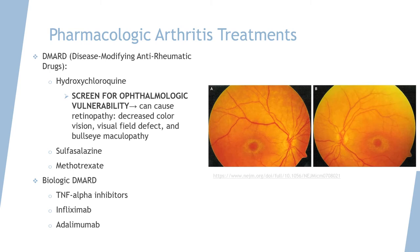Pharmacological treatments for rheumatoid arthritis include the famous DMARDs, or disease-modifying anti-rheumatic drugs. An example is hydroxychloroquine — but beware of the ophthalmologic side effects of this drug. It can cause retinopathy, overall decreased color vision, visual field defects, and this characteristic bullseye maculopathy — look at the target-shaped pattern shown on the two fundoscopy pictures on the right. Sulfasalazine and methotrexate are also other types of DMARD. Biologic DMARDs include the TNF-alpha inhibitors infliximab and adalimumab, which are synthetic antibodies targeted specifically to our needs.